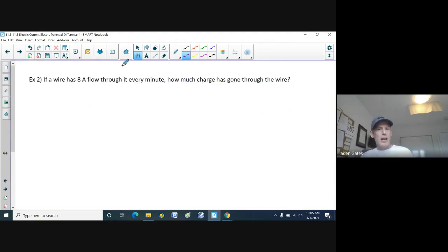If a wire has eight amps of flow through it every minute, how much charge has gone through the wire? So let's see. We have an I value. This time we know the current, eight amps. Flows through it every minute. So our time, again, minutes is no good to us, even though we have one minute here. I got to convert that to our standard units, which is 60 seconds. And this time we want to know how much charge, so that is our Q value.